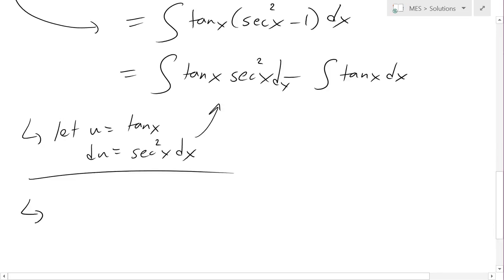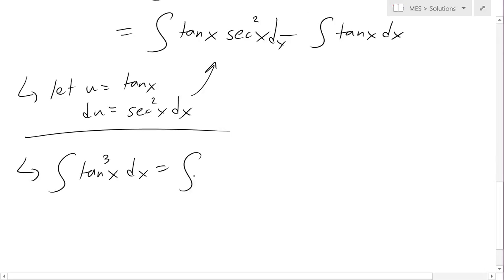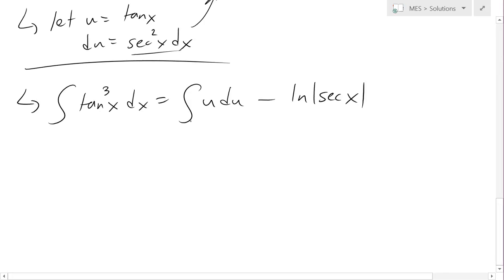So we can apply this substitution. Overall we get: integral of tan cubed x dx equals integral of u du minus integral of tan x dx, which is just integral of u du minus ln of secant x. We'll add a constant later.